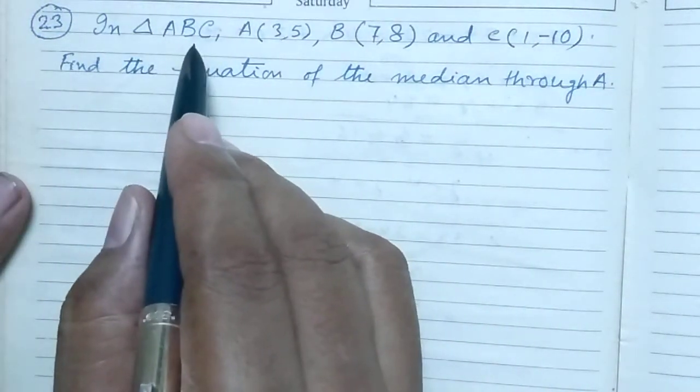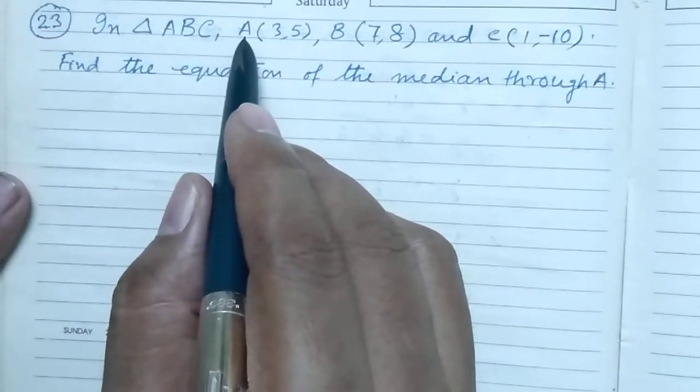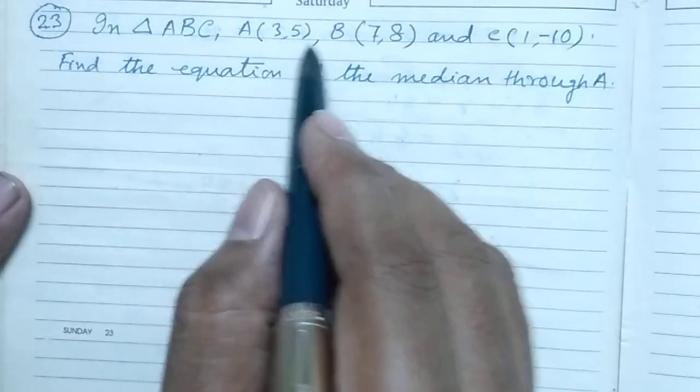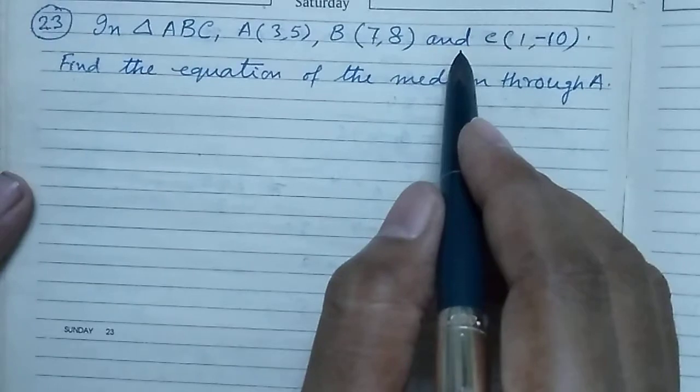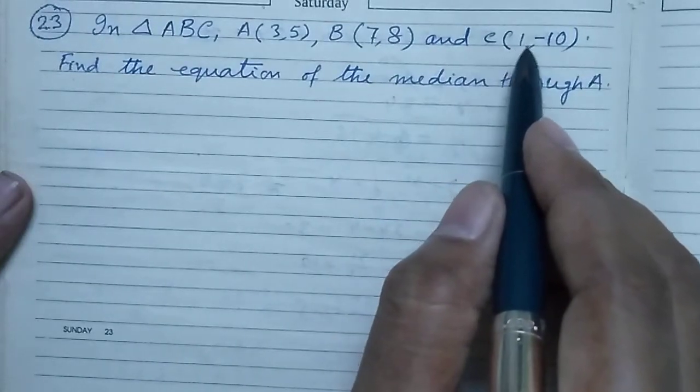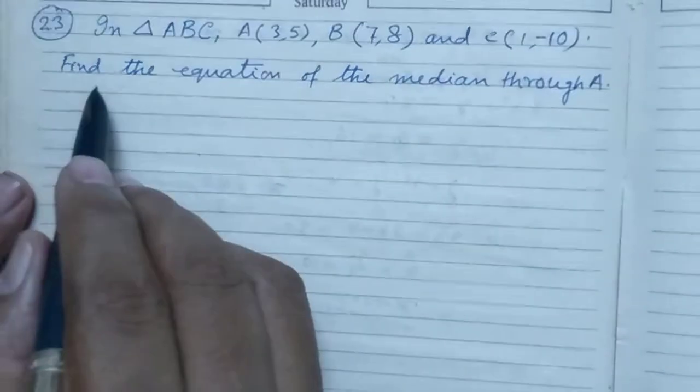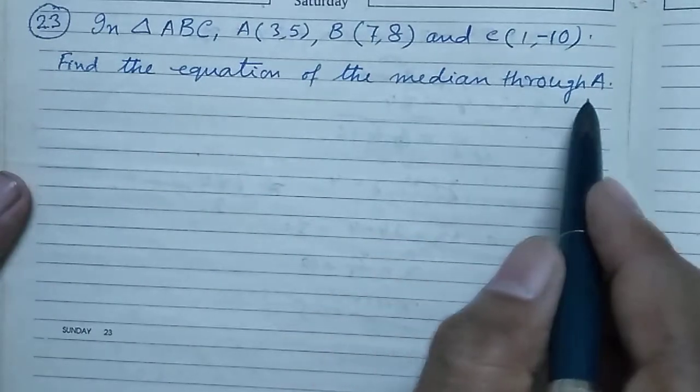In triangle ABC, the coordinates of A are (3, 5), coordinates of B are (7, 8), and coordinates of C are (1, -10). Find the equation of the median through A.